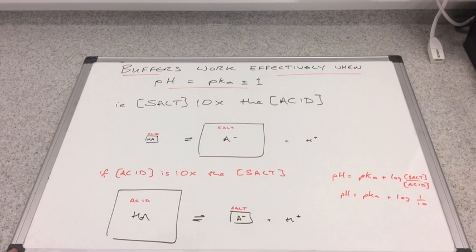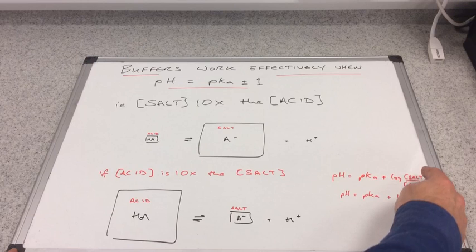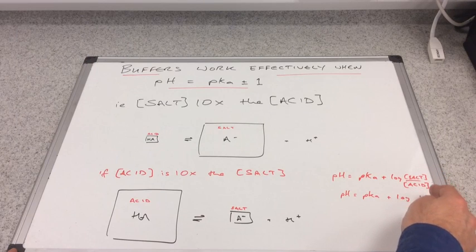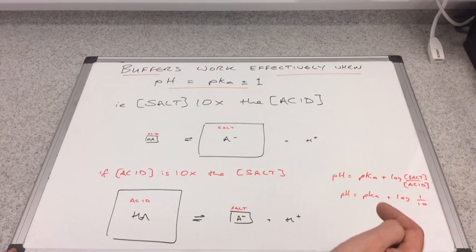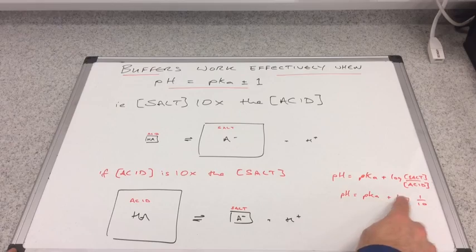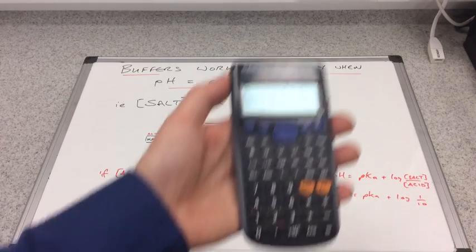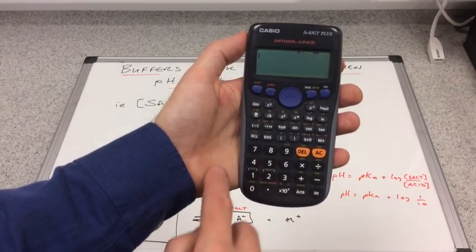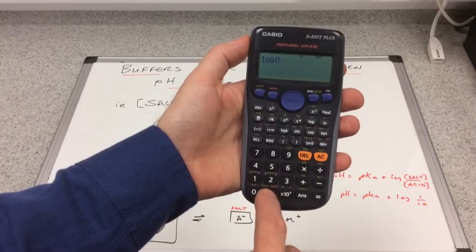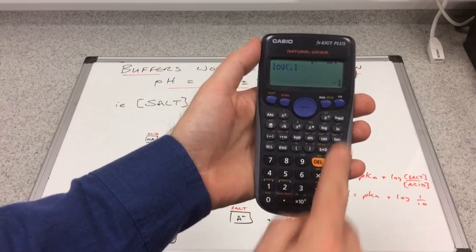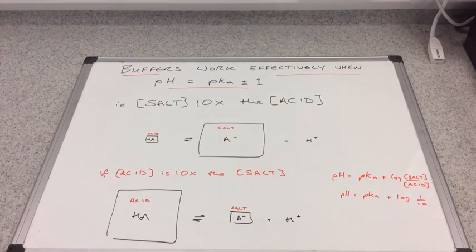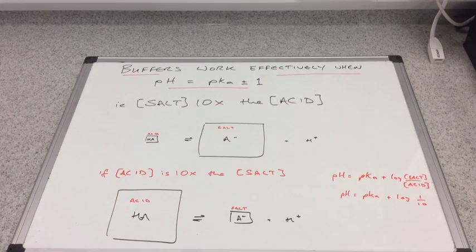The acid concentration is greater than the salt concentration by a factor of 10. Feeding into the Henderson-Hasselbalch equation, we're going to get salt over acid is 1 over 10, so pH equals pKa plus log of 0.1. Log of 0.1 equals minus 1, so there's that minus 1 limit.